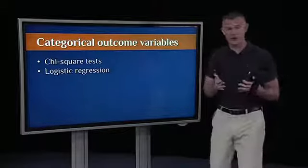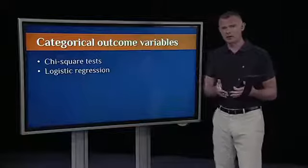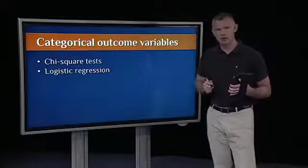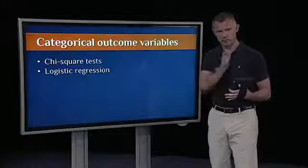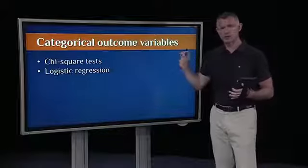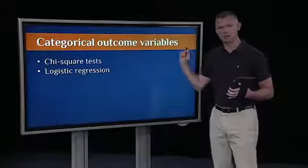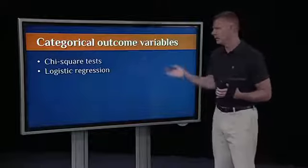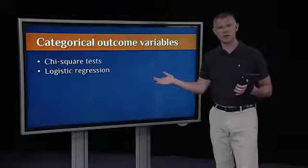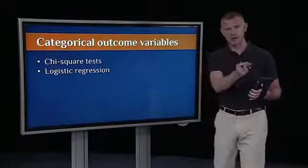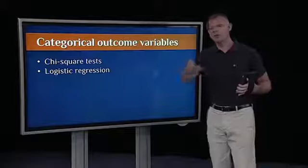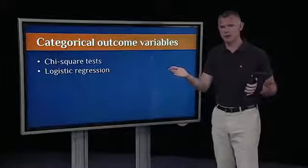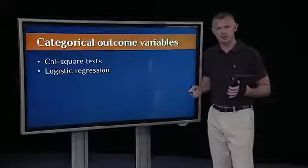What happens if you have a categorical outcome variable? In those cases, we use chi-square and logistic regression. If all of your variables are categorical, both your outcome and your predictors, then you can do chi-square tests. We did the chi-square goodness of fit and the chi-square test of independence. Then, we looked at binary logistic regression, where we had a binary categorical outcome variable with a whole set of predictors that didn't have to be categorical. They could be a combination of categorical and continuous.